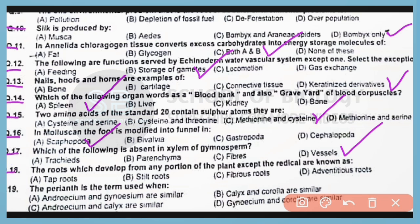Question number 18. The roots which develop from any other portion of the plant except the radicle are known as adventitious roots. Correct answer is option D.